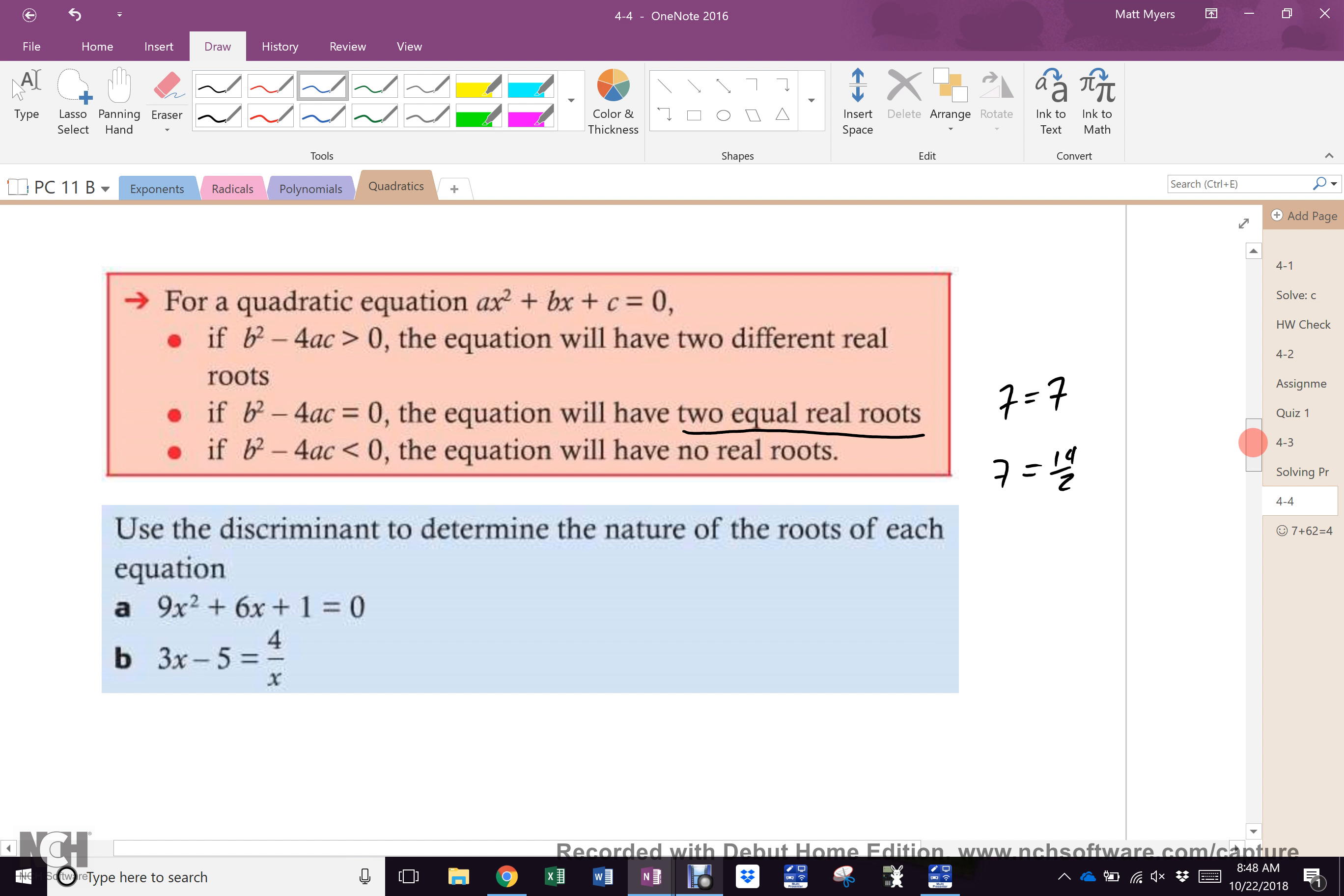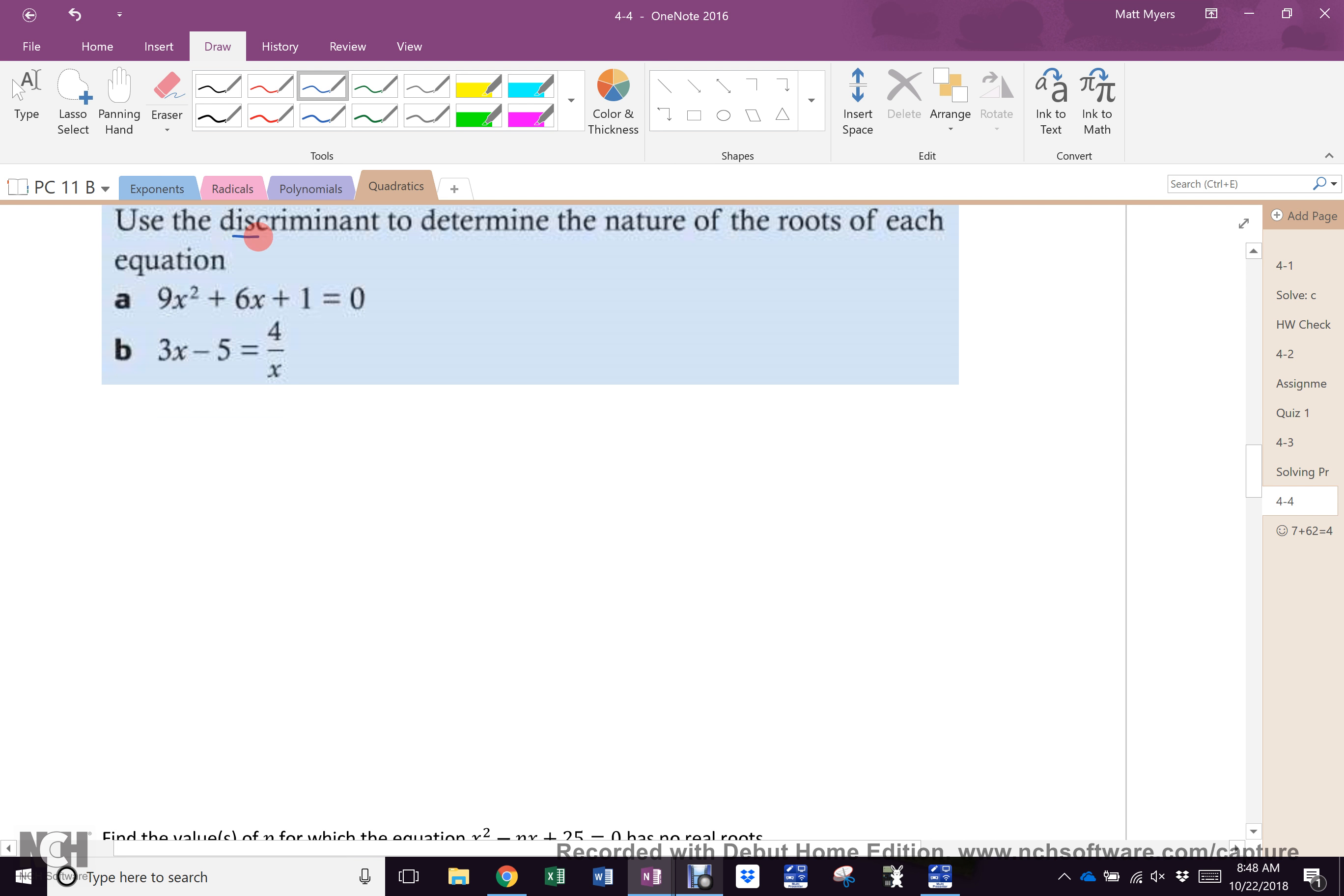When we get into graphing, if you check the discriminant and there is no real roots, then your graph cannot touch the x-axis at all. So, we are only going to use the discriminant. We are only going to look for the nature of the roots. Which means I do not want to value, do I? There can only be one of three answers here.